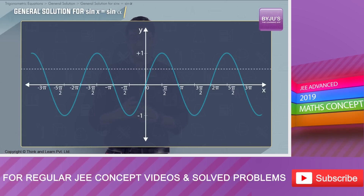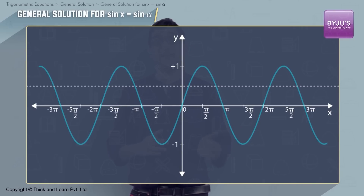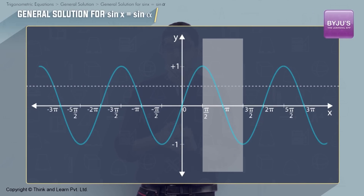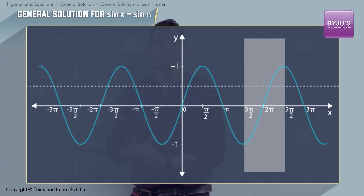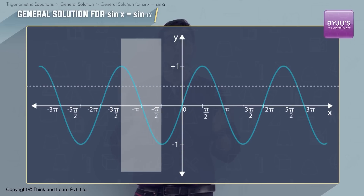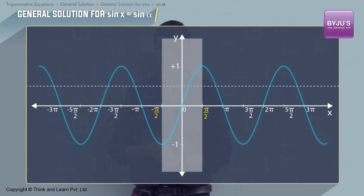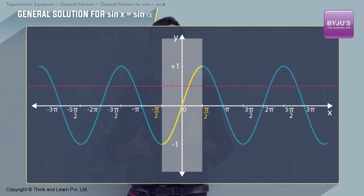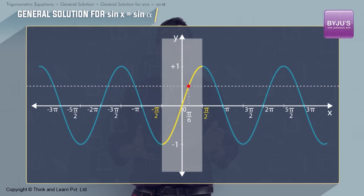The range of sin x is the closed interval [-1, +1]. Let's pick a region in this graph where the entire range of sin x is included. For simplicity's sake, this region is chosen as the closed interval [-π/2, +π/2]. In this interval, sin x varies between -1 and +1, and the line y = 0.5 cuts at exactly one point, which is π/6.